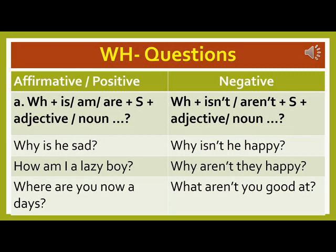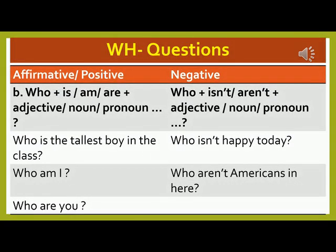WH question Structure A for is/am/are: WH + is or am or are + Subject + adjective or noun. Examples: 'Why is he sad?' / 'How am I a lazy boy?' / 'Where are you nowadays?' Negative: WH + isn't or aren't + Subject + adjective or noun. Examples: 'Why isn't he happy?' / 'Why aren't they happy?' / 'What aren't you good at?' WH question Structure B — Who + is or am or are + adjective or noun or pronoun. Examples: 'Who is the tallest boy in the class?' / 'Who am I?' / 'Who are you?'